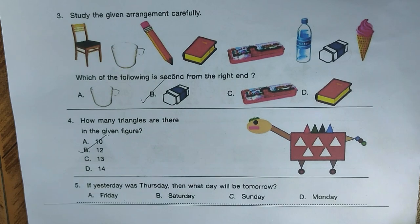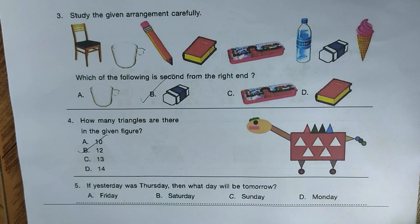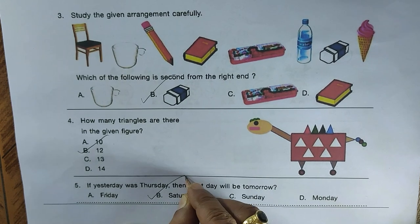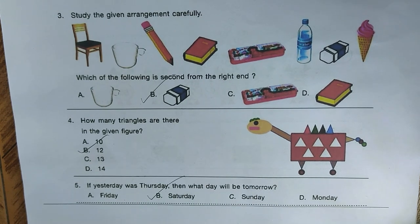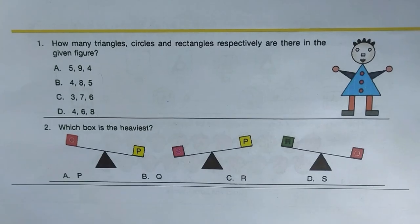Question five: if yesterday was Thursday, what day will tomorrow be? If yesterday was Thursday, today is Friday, and tomorrow will be Saturday. Hence option B is the right answer.